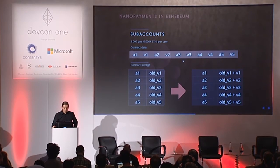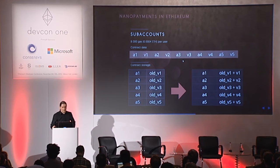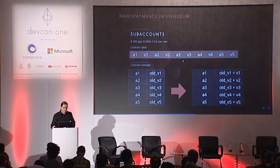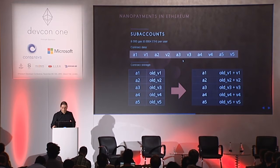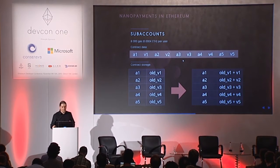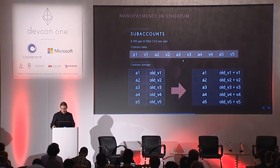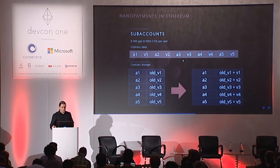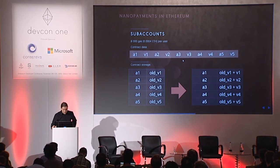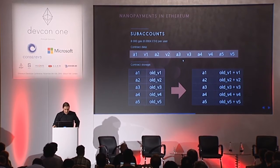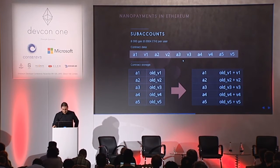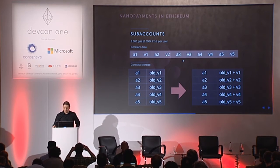Our minor improvement over batching is sub-accounts. Sub-accounts is a simple smart contract which establishes a mapping between addresses and values. The sender transfers value by sending a vector of address-value pairs, and they accumulate in accounts stored in the contract. From time to time users can cash out. We believe this should cost on average 8,000 gas per user: about 5,000 gas for contract modification, 2,000 gas for sending the message, and around 1,000 gas for cashing out.